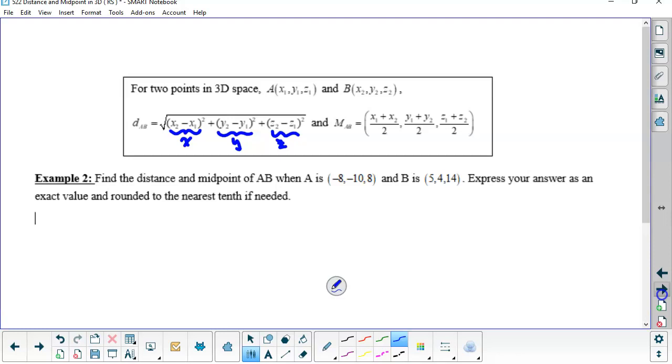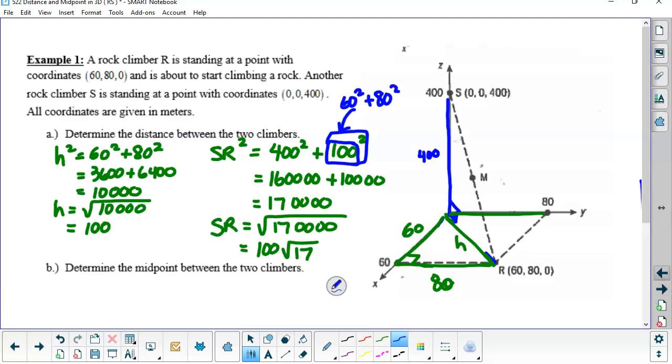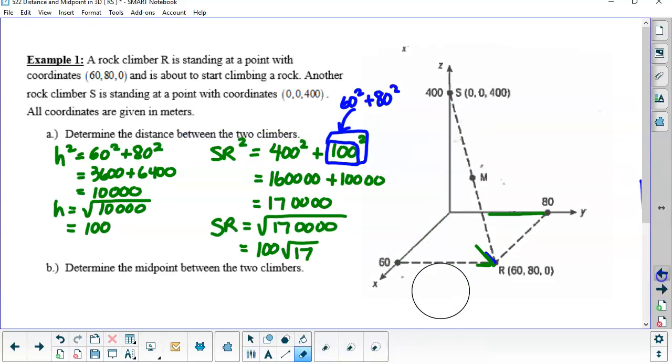And then midpoint, take a look. The only difference from two dimensions is this extra Z part. For midpoint, the only difference is this extra Z part. If we look at our diagram for midpoint, I'm going to just erase all of this just to make it clean here. So there's our midpoint.